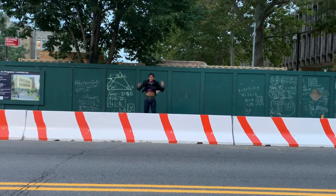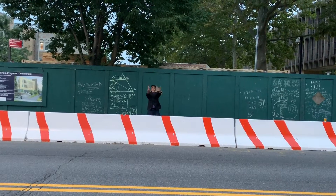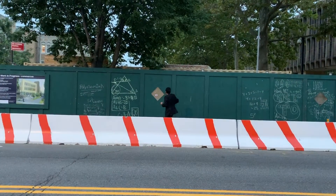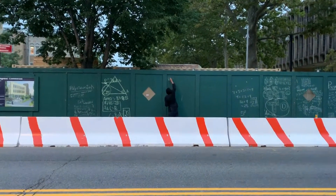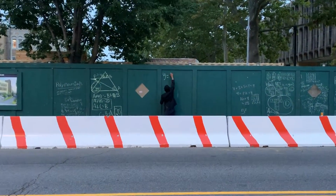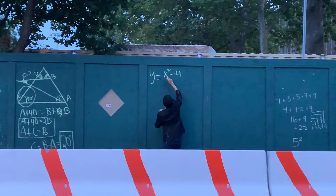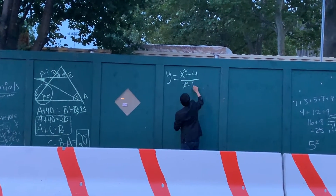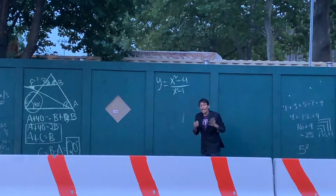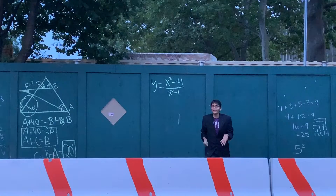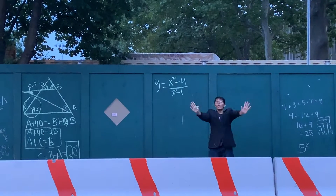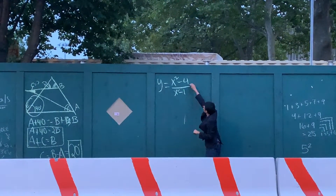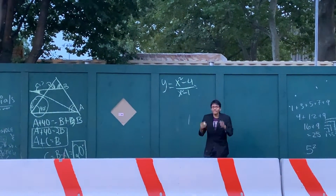All right, today we're going to check out an SAT math problem. The function is x squared minus 4 over x squared minus 1, and we have to decide whether this function has some asymptotes or not. Any function can have vertical and horizontal asymptotes.